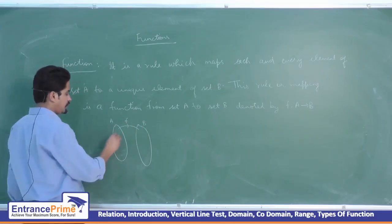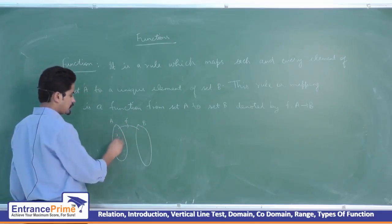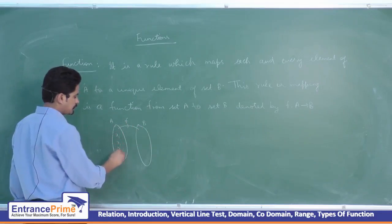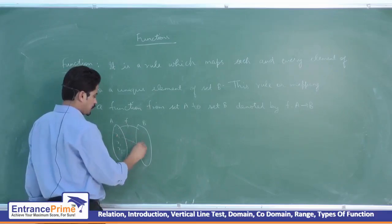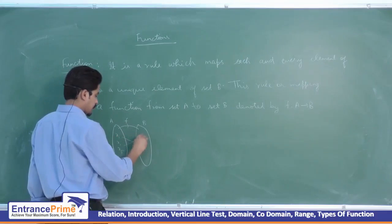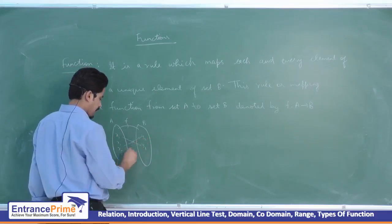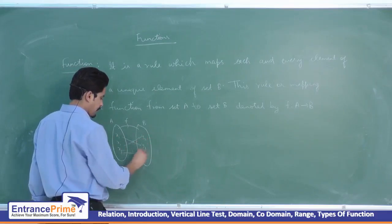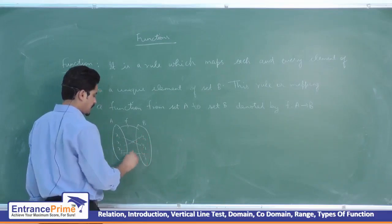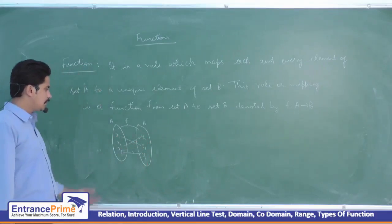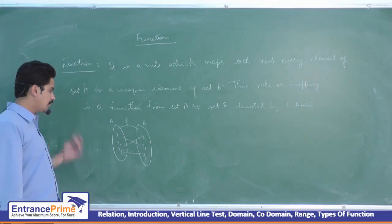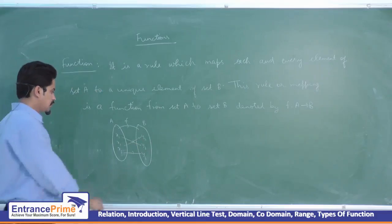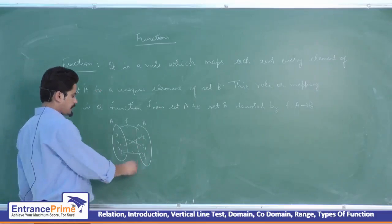Now if we take some elements which uniquely relate each element of set A to a unique element in set B, then this correspondence is called a function. That is why it is a function.